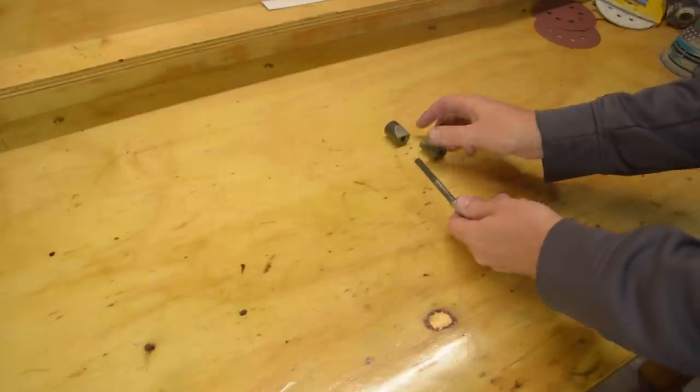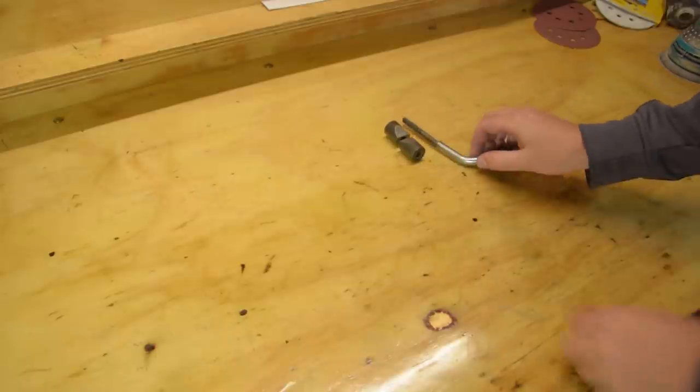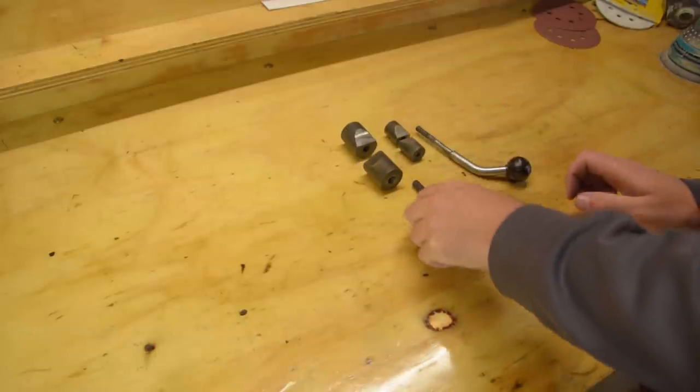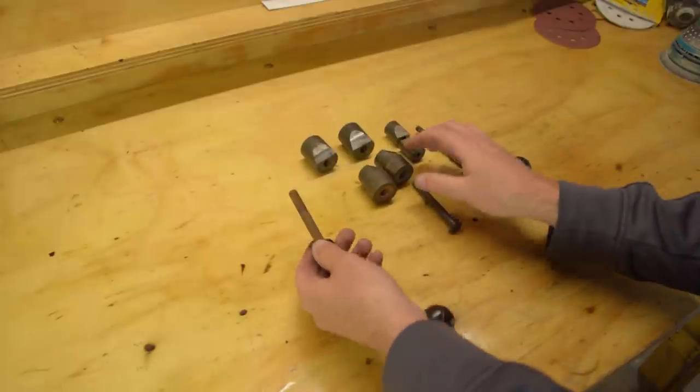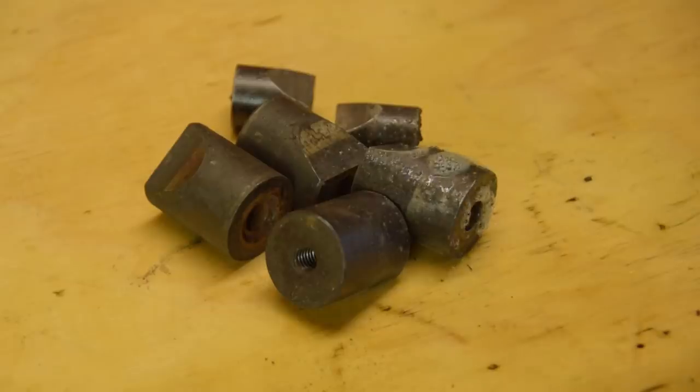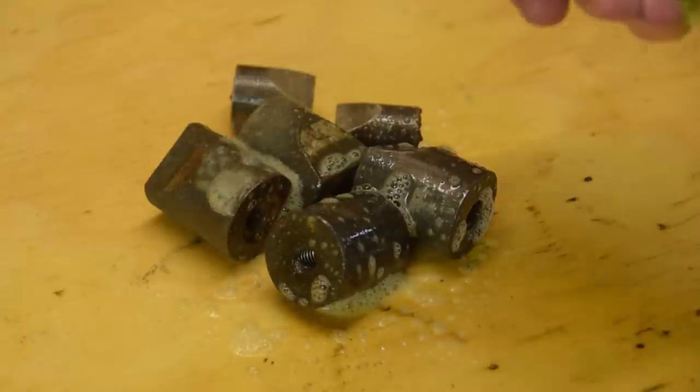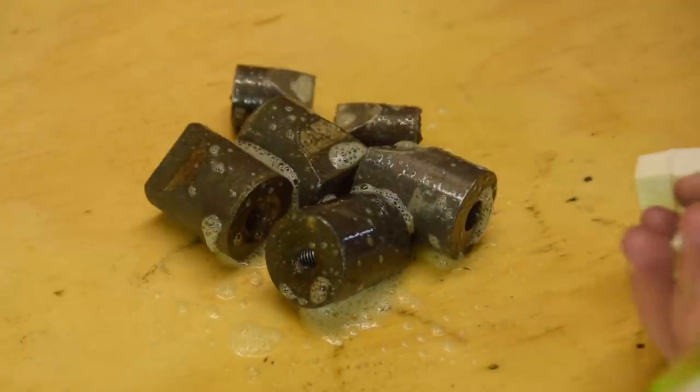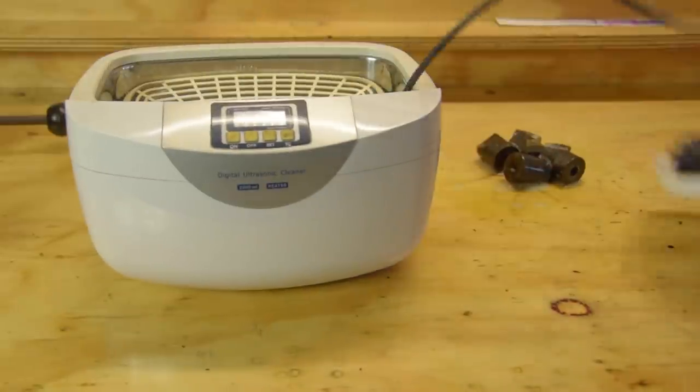There are two types of finishes that can be a hurdle for the home workshop: chrome and black oxide. It is possible to properly redo both at home with the right equipment and chemicals. But instead I'm going to show a couple of ways to replicate both surfaces cheaply and easily.